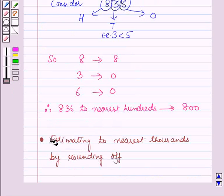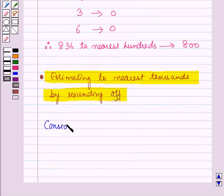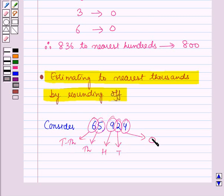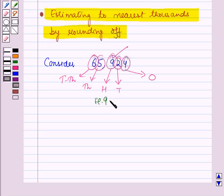Now let us learn estimating to the nearest thousands by rounding off. Consider the number 65924. We have to round off this number to the nearest thousands. Here, 6 is at the ten-thousands place, 5 is at the thousands place, 9 is at the hundreds place, 2 is at the tens place, and 4 is at the ones place. For rounding off to the nearest thousands we consider the digit to the right of the thousands place, and here 9 is greater than 5.